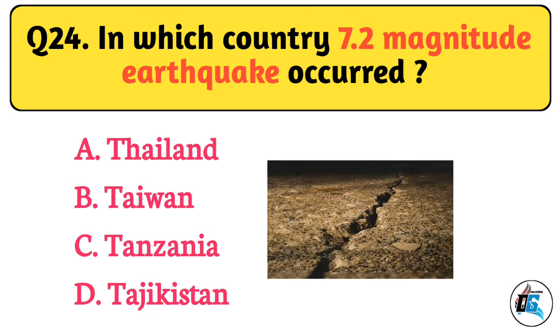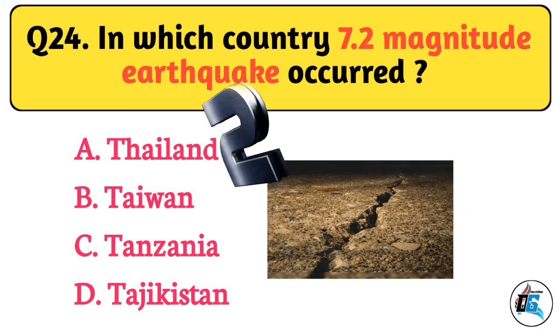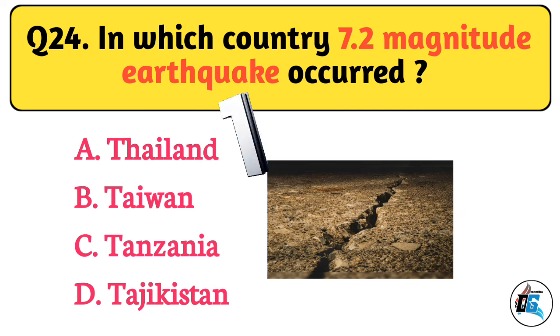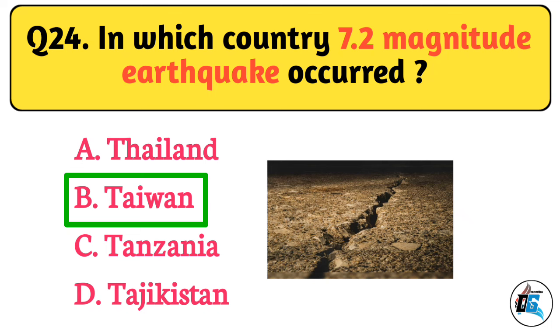Question No. 24. In which country did a 7.2 magnitude earthquake occur? The right answer is Option B: Taiwan.